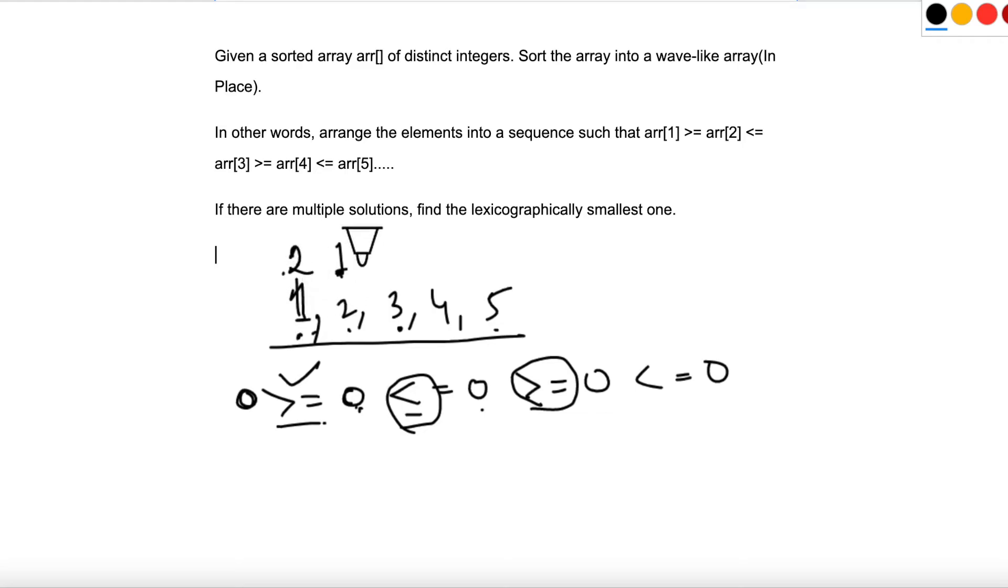We should only be worried about the greater than or equal to check because our elements are sorted in increasing order. So this forms a pattern. If we're able to swap alternate elements like 1, then 3 and 5 and so on, we can get our desired output. In this case, we swapped 1 and 2, we got 2 and 1. Now we'll ignore this element, go to 3. We'll swap 3 and 4, so we'll get 4 and 3. Again, we'll ignore this element. We're trying to swap the elements at even positions because it starts with 0, 1, 2 and so on.